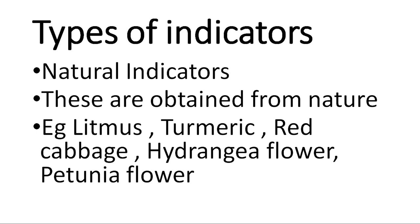There are many types of indicators. The first type is natural indicators — those obtained from nature. For example, litmus is obtained from a plant called lichens. Turmeric is used in the kitchen. Red cabbage juice gives a reddish color in acids and a bluish color in bases. Hydrangea flowers and petunia flowers are also natural indicators.